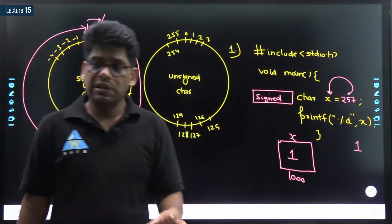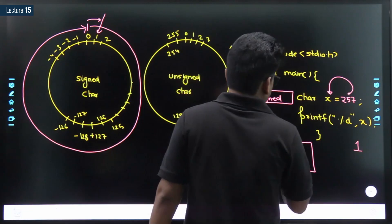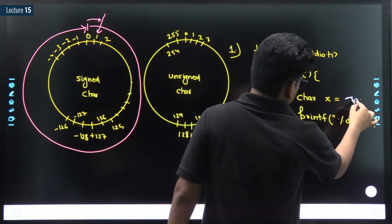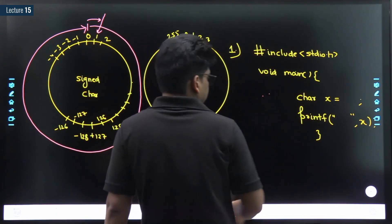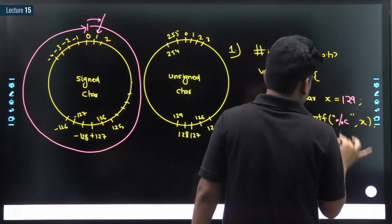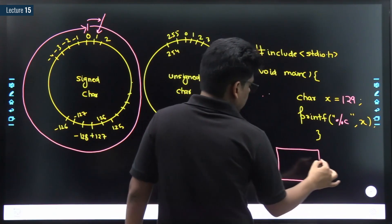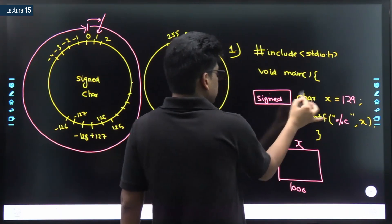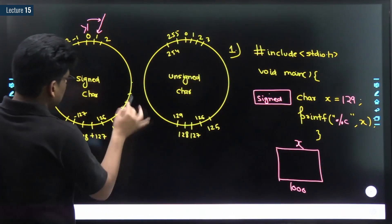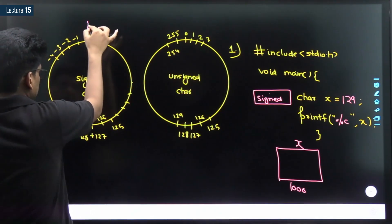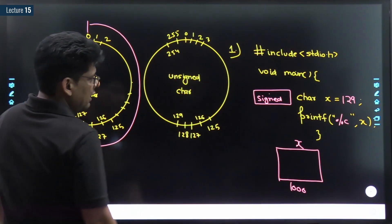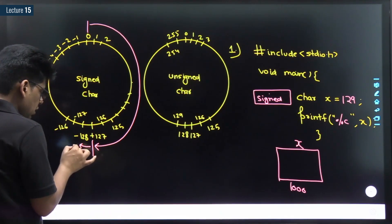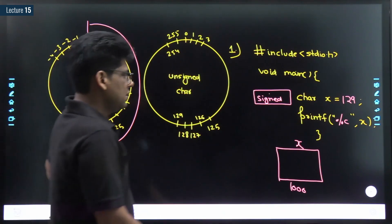Now I will discuss the biggest, most confusing question. char x equals 129, printf percentage c. If we didn't mention anything, it is signed by default. Is 129 present in the signed circle? No. Using the same concept, we start in the clockwise direction because our number is positive. 129 — we have covered 127 so far, and 129 is 2 more than 127 — so 1 and 2 more positions. The value that gets stored inside x is minus 127.